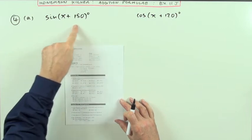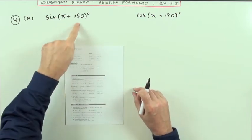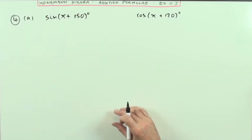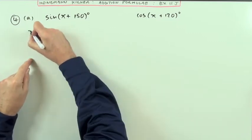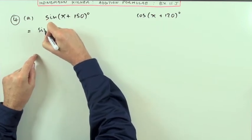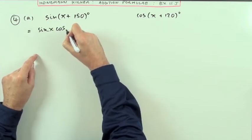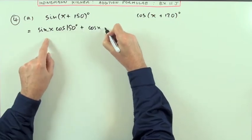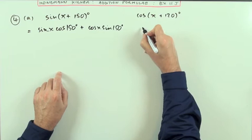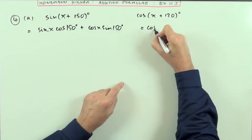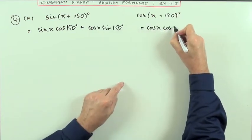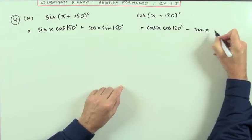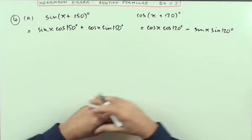Question 4 says for part A, expand sin(x + 150)° and cos(x + 120)°. It's unclear exactly how far to take the expansion, but the simple expansion would be sin x cos 150° plus cos x sin 150°. An expansion for cos(x + 120)° would be cos x cos 120° minus sin x sin 120°.